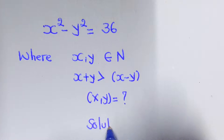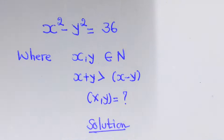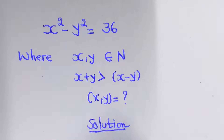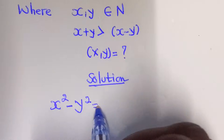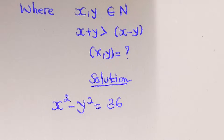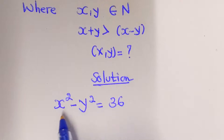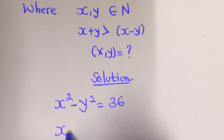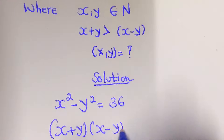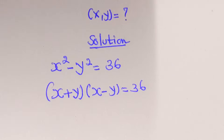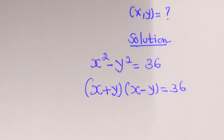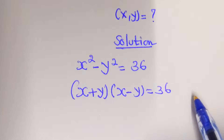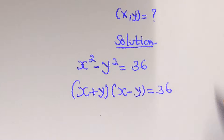Solution. By copy, what we have: x squared minus y squared equal to 36. If you have seen this before, this is the difference of two squares. That's x plus y times x minus y equal to 36. From here, we are going to find two numbers we can multiply together to get 36.